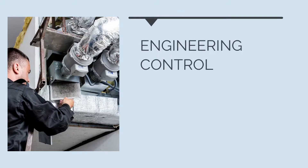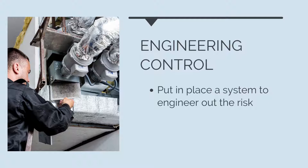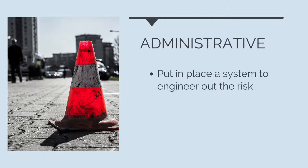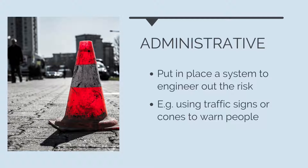An engineering control is where a system is put in place to engineer out the risk. These are not as effective as eliminating, substituting, or isolating. An example of an engineering control could be to put in place ventilation when working with dangerous chemicals. Administrative controls are work methods and procedures put in place to limit exposure to hazards. They are not considered a very effective control. An example could be using traffic signs or cones to warn people of a hazard.